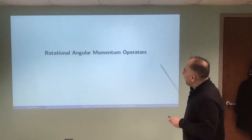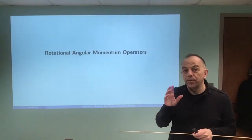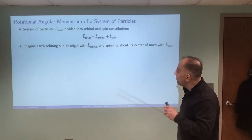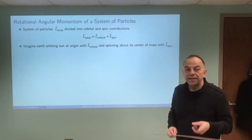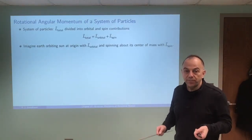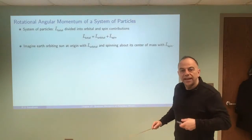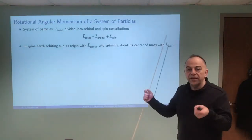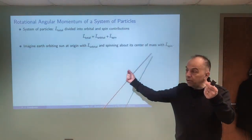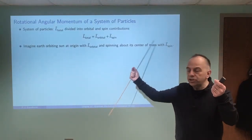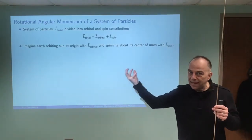Let's begin by looking at the rotational angular momentum operators for the quantum rigid body. If you remember back in Chapter 4, we examined the angular momentum of a system of particles, and we saw that the angular momentum can be divided up into two contributions: an orbital contribution and a spin contribution. The example we gave was of the Earth, which is orbiting around the Sun. The angular momentum of the Earth orbiting around the Sun, with the Sun defining the origin, is the L orbital contribution, and then the Earth spinning about its axis gives the spin contribution.